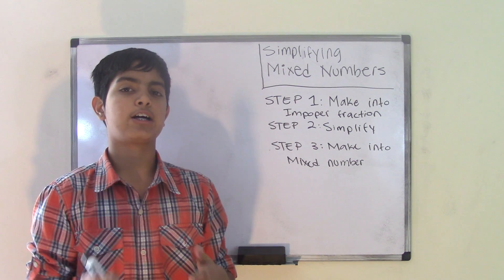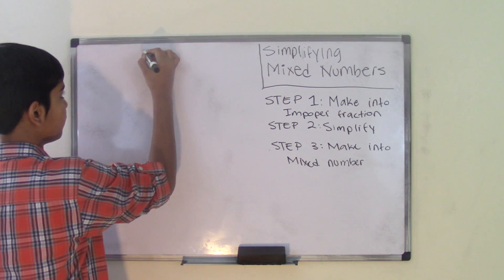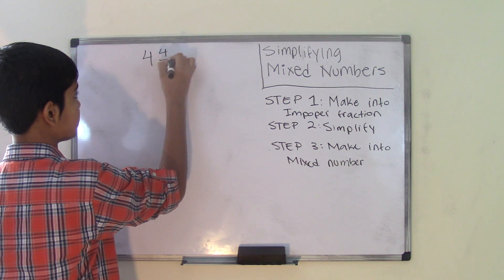A mixed number is simply a combination of a whole number and a fraction. So a mixed number would be something like 4 and 4 over 6.